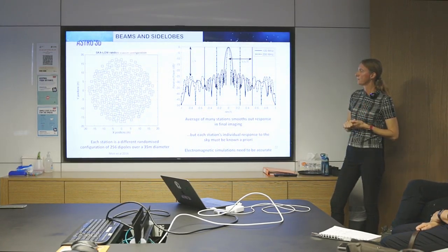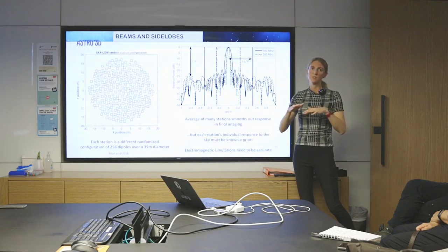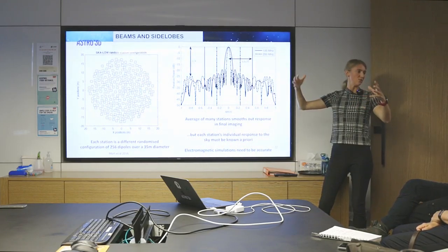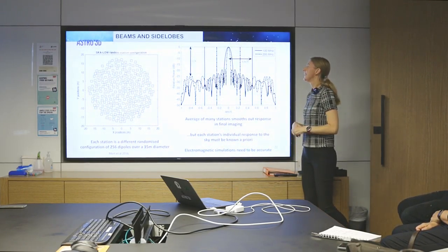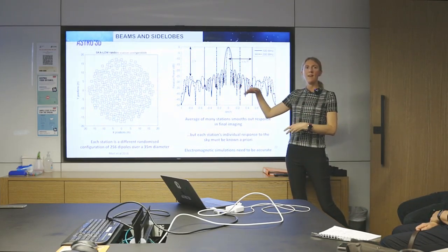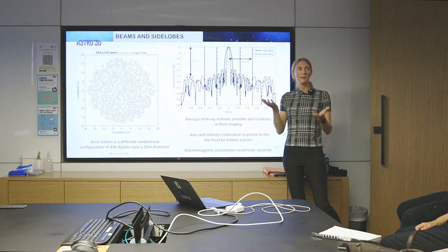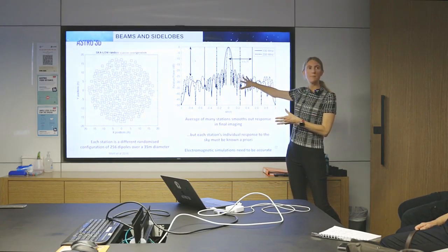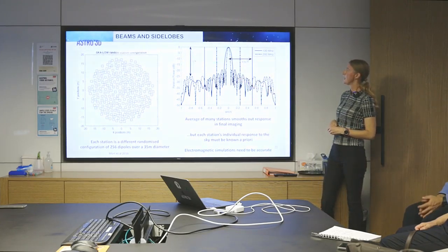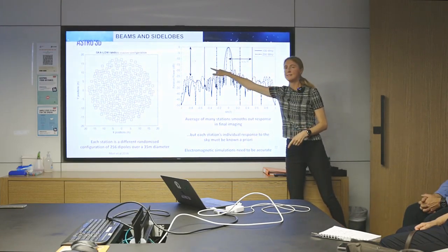The second one is that we need to understand how each of these individual stations views the sky. And that's because every single one of them is different. They're all a different randomized layout of these 256 dipoles. So here's an example on the left of a station configuration. That will have a particular response on the sky. And because it's made up of little individual dipoles and not some nice smooth dish, it means at the edges of the sky you get all sorts of funny features, all sorts of lobes and nulls. And you don't want that in your data because that's really difficult to deal with. And that's the reason why every one of them is different. That if you form an image out of all of them, that you hope that all of those little effects at the edges will average out. And there's been work to show that. And that's what this shows here.